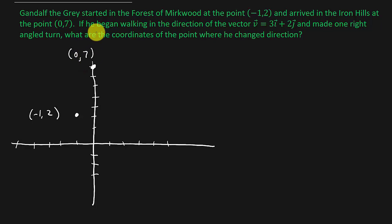It says if he began walking in the direction of the vector 3i + 2j. So remember, this vector here, that's the same thing as if you wrote that vector. So if we go over 3 and up 2, that's the direction that he walked. So he's walking in this direction right here.